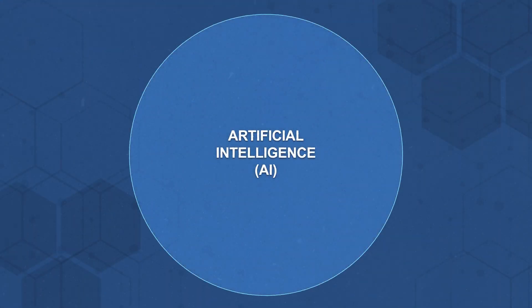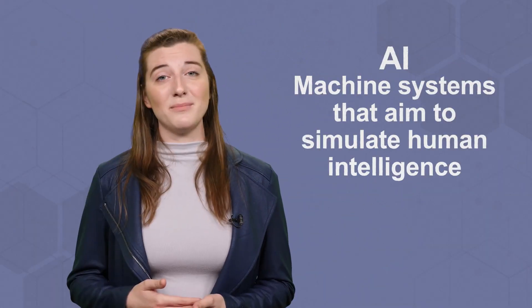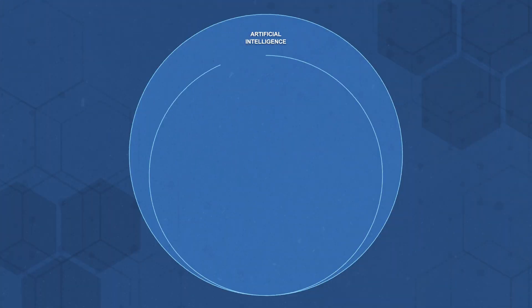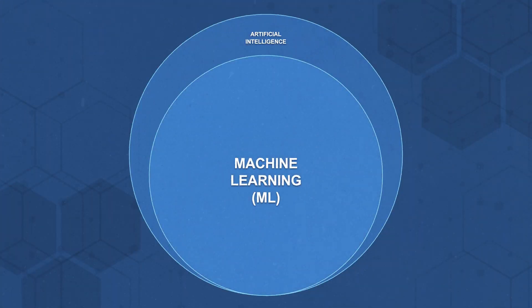Let's start from the top. AI, or artificial intelligence, is broadly defined as machine systems that aim to simulate human intelligence. It's not one technology, but rather an umbrella term. Machine learning, or ML, is a subset of AI. ML algorithms independently learn from and detect patterns in data without being explicitly programmed.